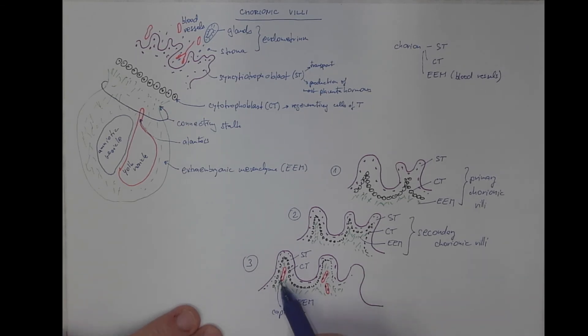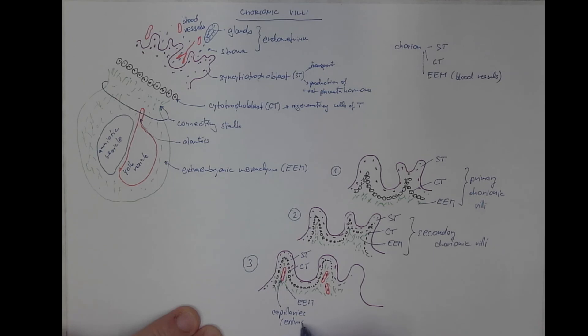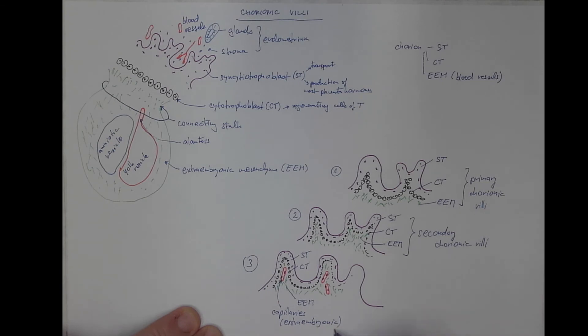They will contain the embryonic blood, but at this time, at the beginning, these are extra embryonic blood vessels which later on will join the embryonic circulation. The vascular roots have not been established yet. This stage is called tertiary chorionic villi.